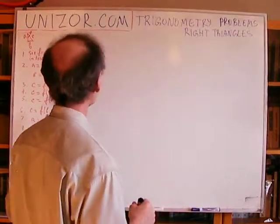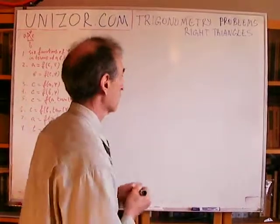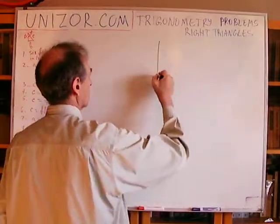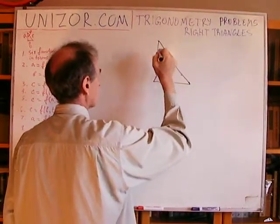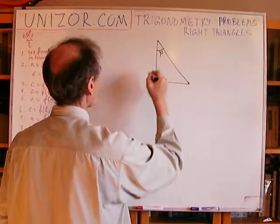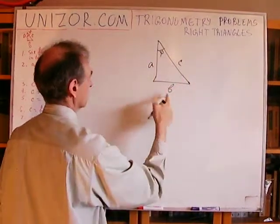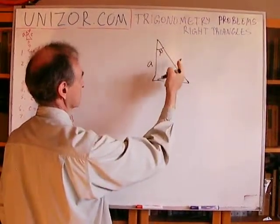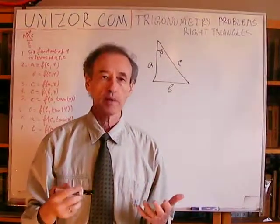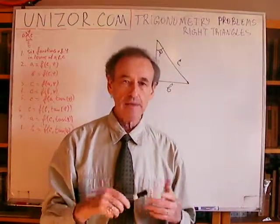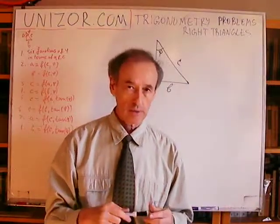Before going into these problems, let me just remind you in general what we are talking about. If we have a right triangle with one acute angle phi and two cateti A and B, where B is opposite, A is adjacent, and C is the hypotenuse, then we can talk about a slightly simpler definition for trigonometric functions.